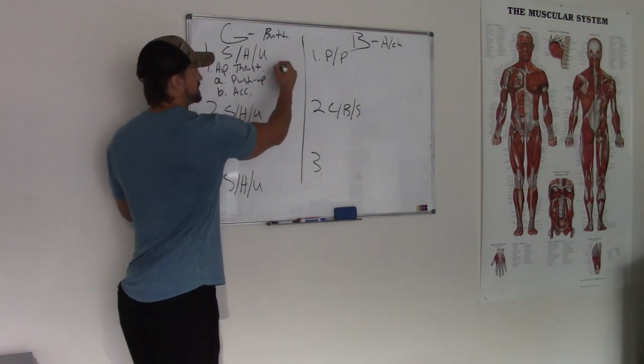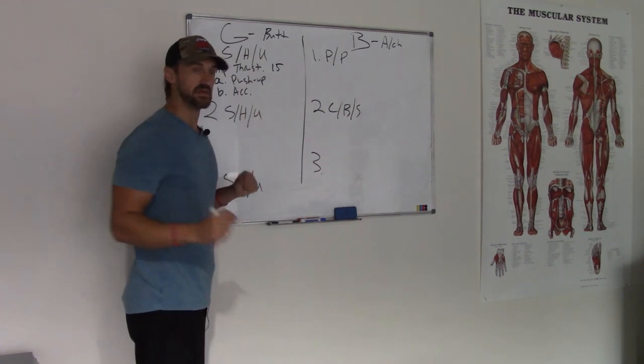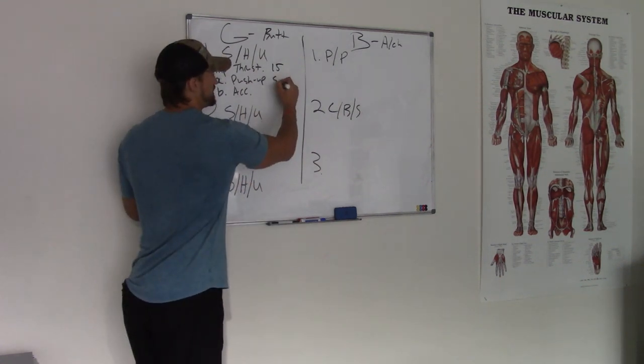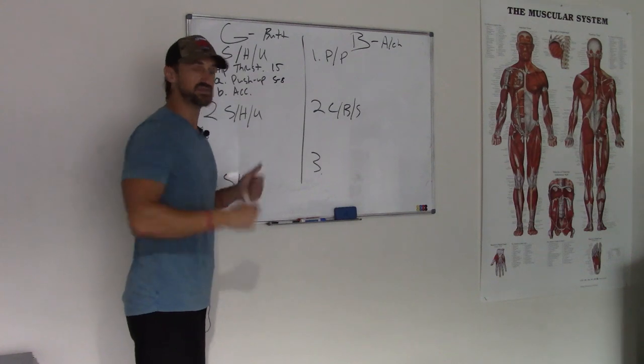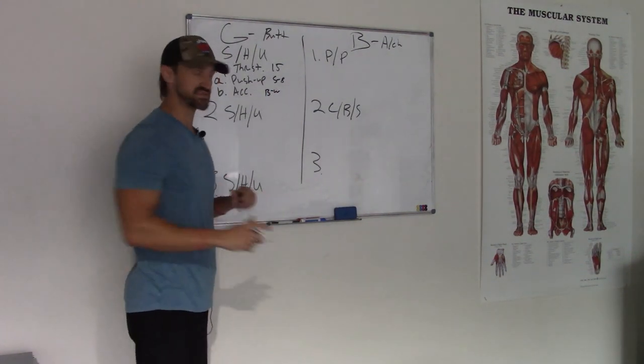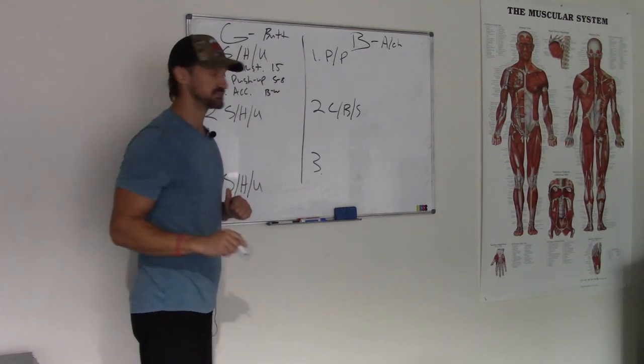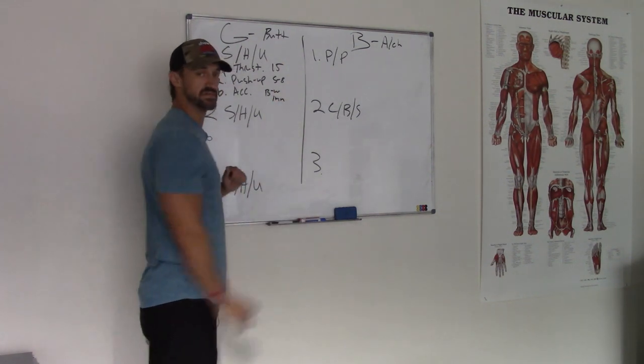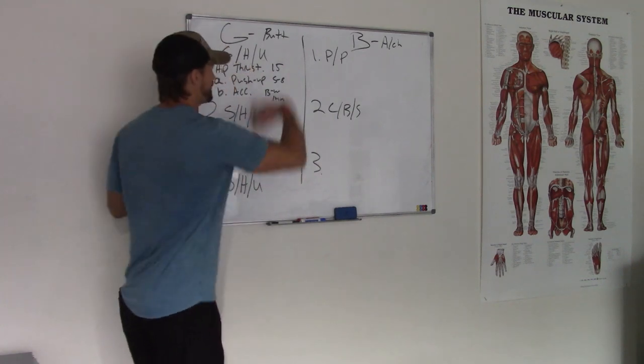So we have a hip thrust. Rest. We do 15 reps. We do a push up. Five to eight. We do some band walks. Go until a burn. You rest until they're ready to go again. Maybe it's a minute. Maybe it's two. Maybe it's three.